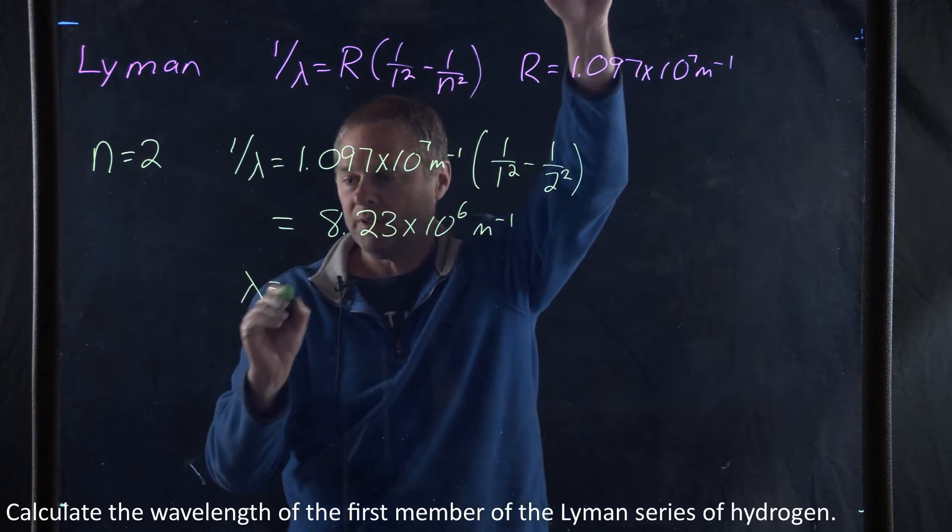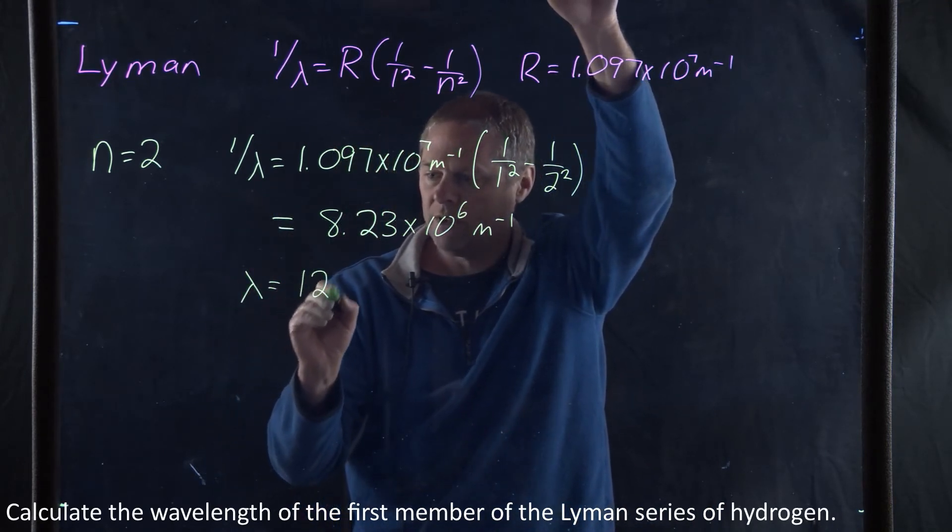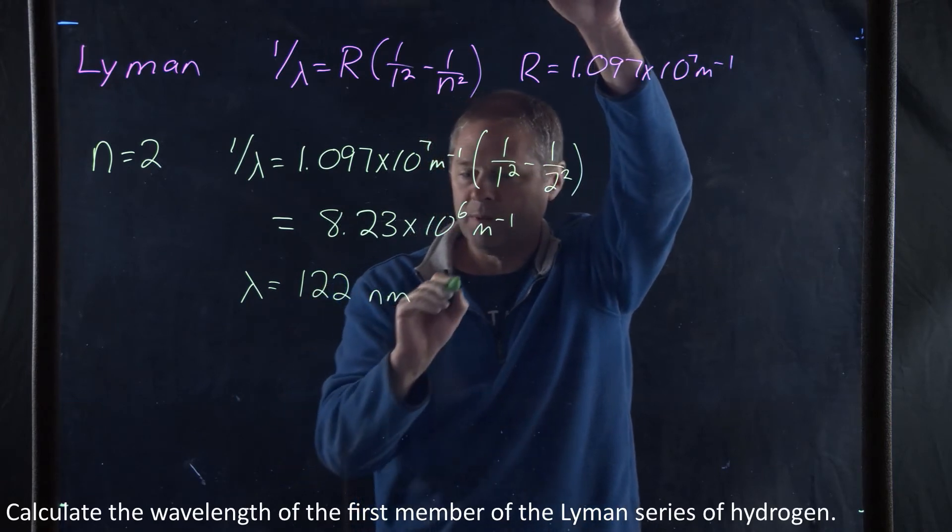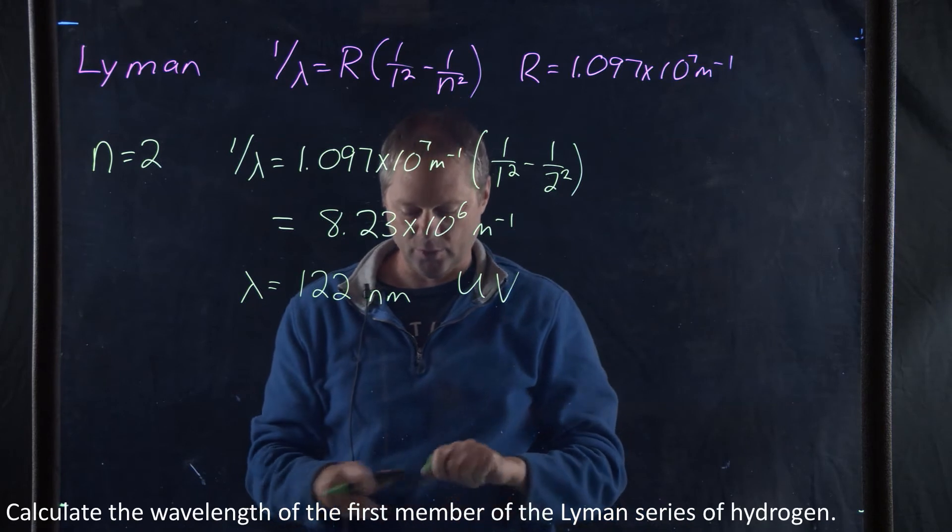We then find our lambda. We take the inverse here, we take the inverse there. We get 122 nanometers, which is in the ultraviolet portion of the electromagnetic spectrum.